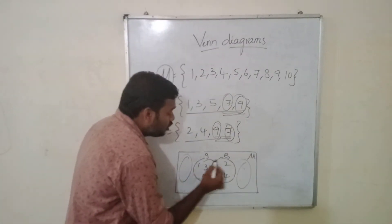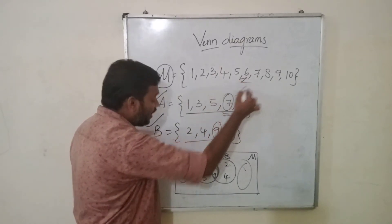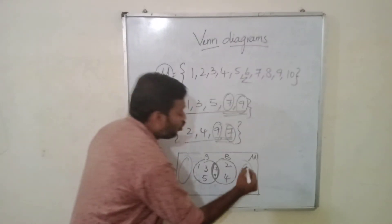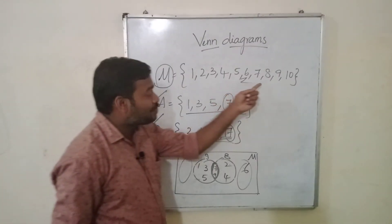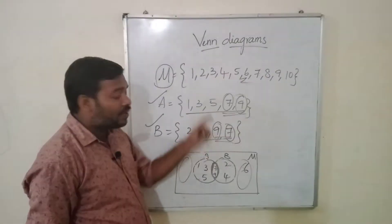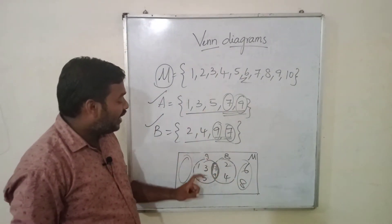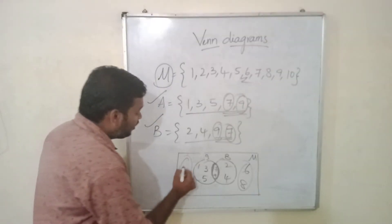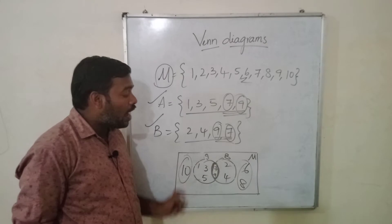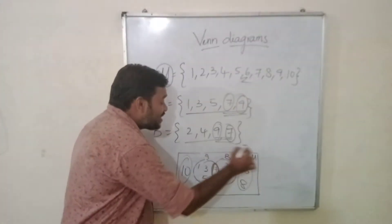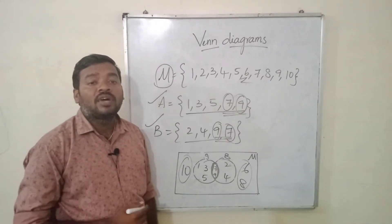Let us see that. Going through the universal set: 1, 2, 3, 4, 5 are covered. 6 is not present in A and B, so write 6 outside. 7 and 9 are in the intersection. 8 is present in the universal set but not in A or B — write 8 outside. And 10 also goes outside. This is how we need to represent the sets in Venn diagram format.